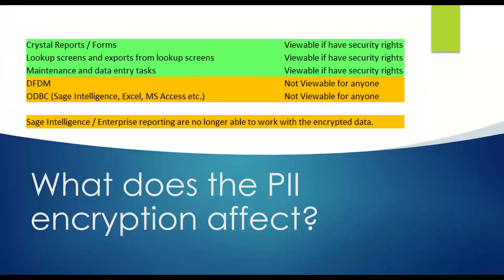Pardon the color scheme on this slide, but green means go. These are the places where, if you have the security right in Sage, you can actually access the PII information. Crystal forms and reports — we'll see that in our demo shortly. You will be able to see that if you have the rights. Look-up screens in Sage — those are the little magnifying glasses you see everywhere, such as employee maintenance — you will be able to see the information there if it's encrypted and if you have the rights, otherwise you won't. And then, of course, in your maintenance and data entry tasks. You cannot see any PII information in Data File Display and Maintenance — DFDM — that's just the utility used to see the raw data in Sage, sometimes used by consultants to fix data errors. But you can't actually see this data there.